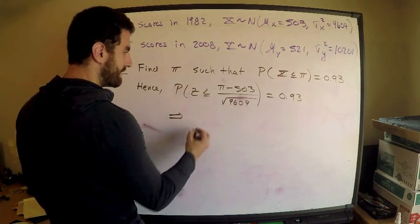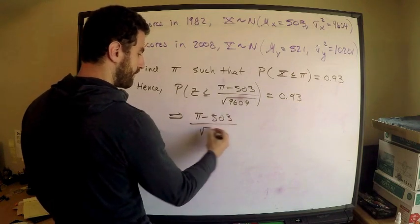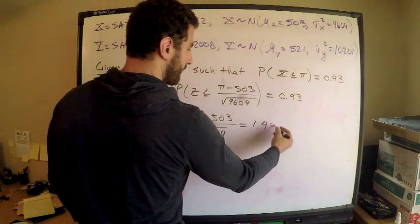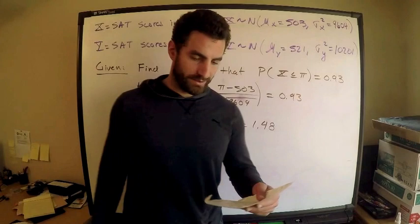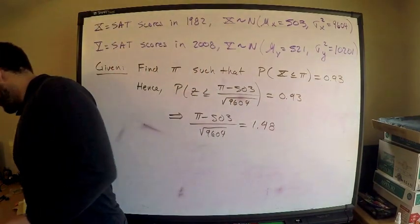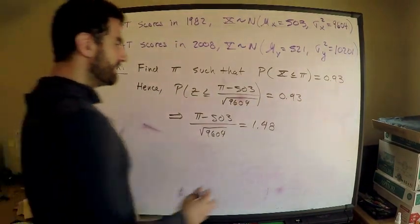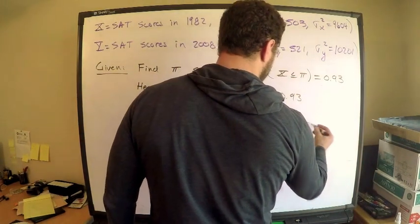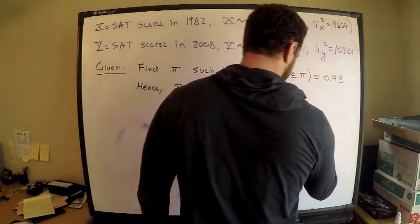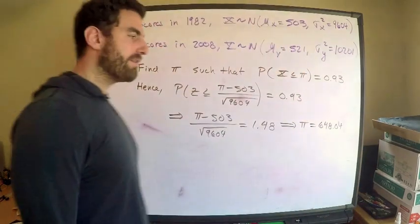Which means that pi minus 503 divided by square root 9604 is equal to 1.48. Do some algebra, just get pi by itself. What you should get here is that this tells me that pi, which is going to represent Abby's mother's score, is 648.04. When I round this—